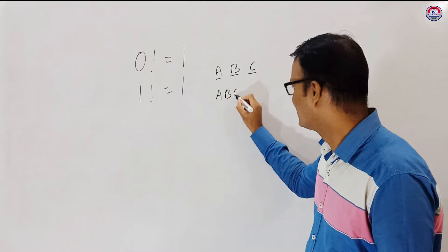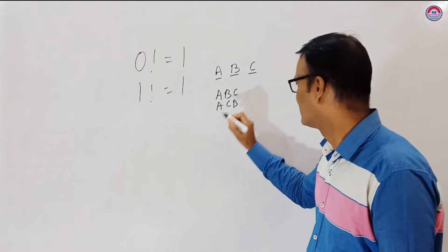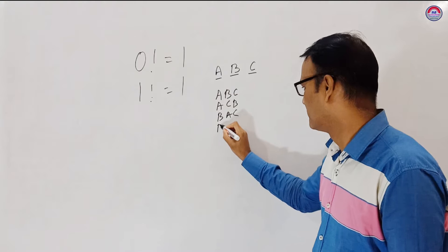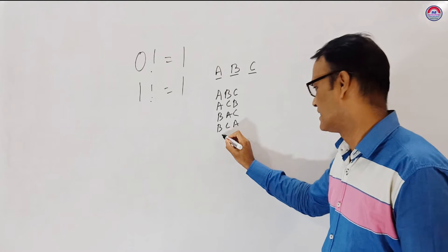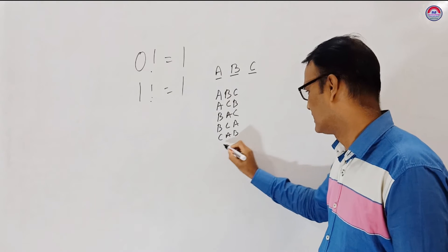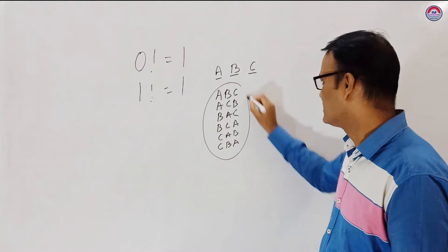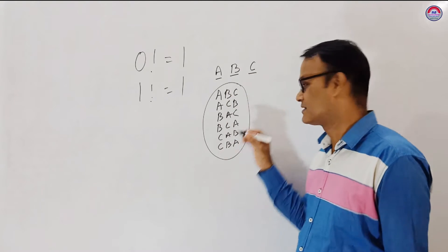You see, I can write ABC. I can write ACB. Similarly, BAC. BCA. CAB. CBA. So here using the 3 letters, I wrote 6 words.